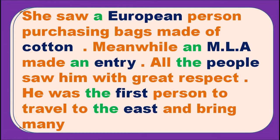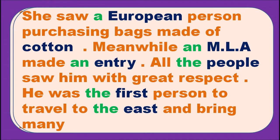For 'an MLA': the acronym MLA begins with a vowel sound, that is why we use 'an.' For 'an entry': the word entry also starts with a vowel sound. 'The people' refers to the known people who are in the market. With ordinals — first, second, third — we use 'the.' With directions — east, west, north, south — we also use 'the.'